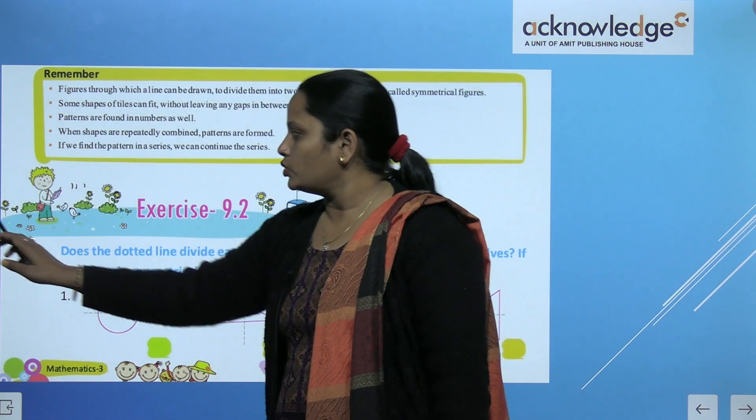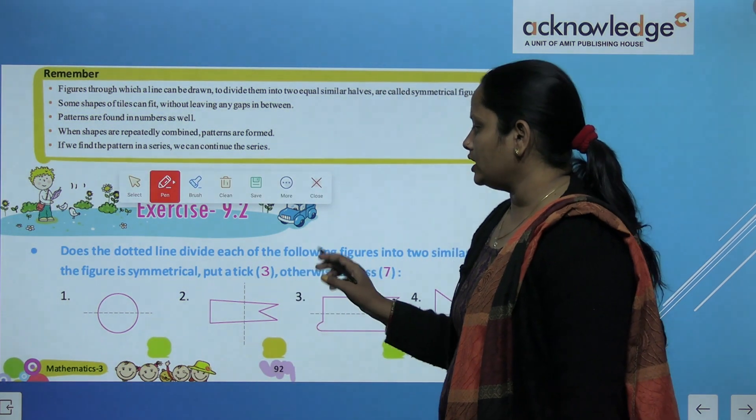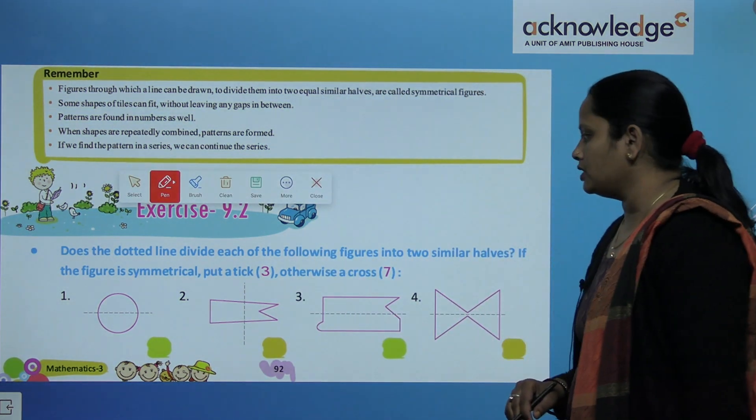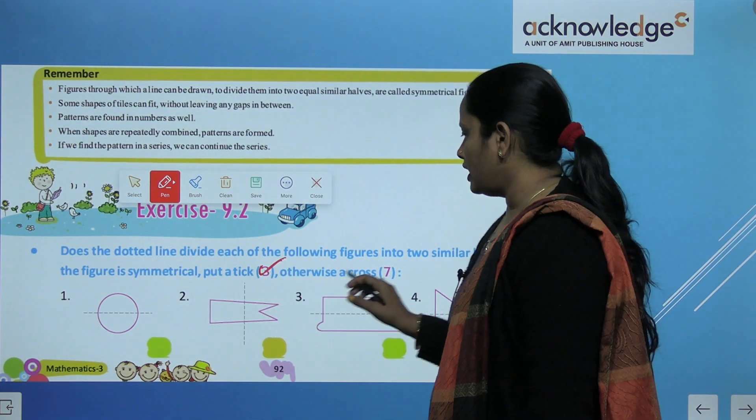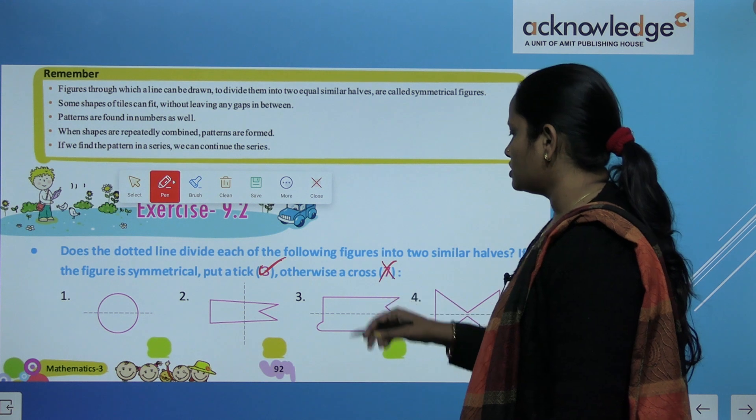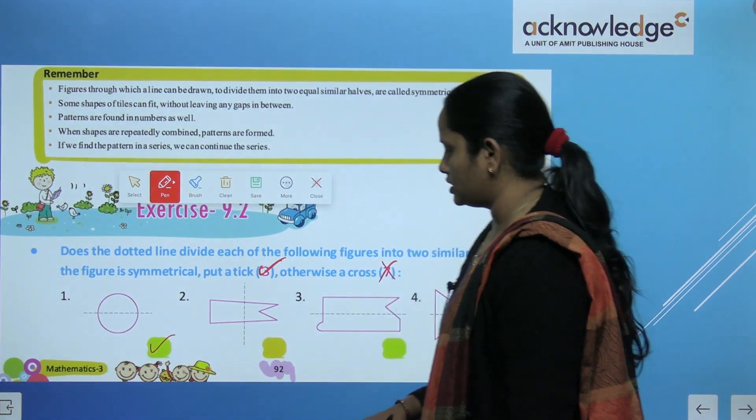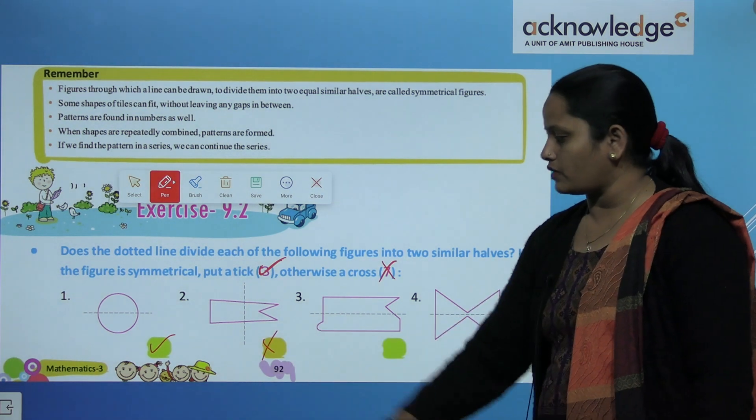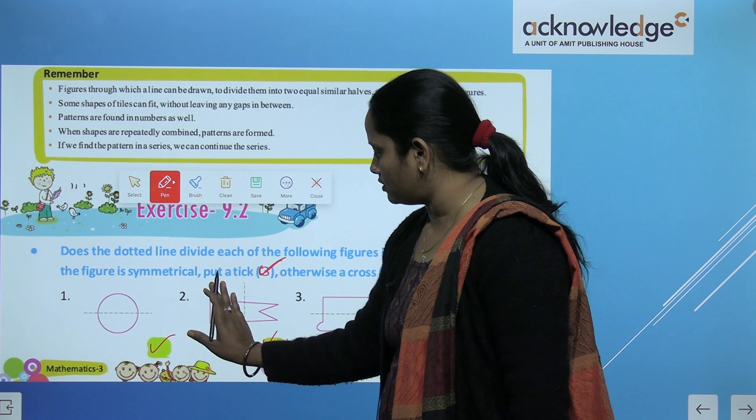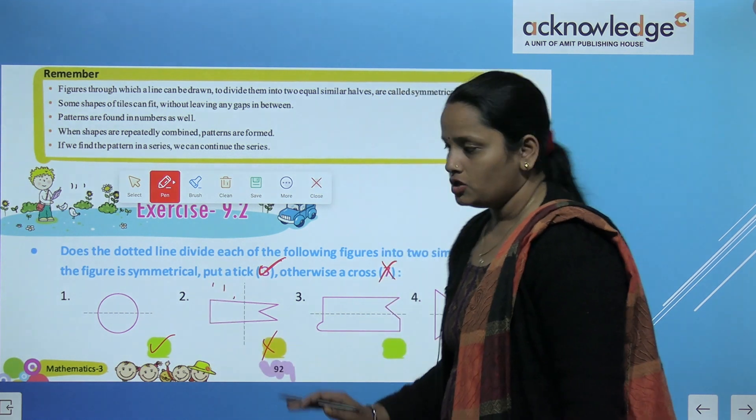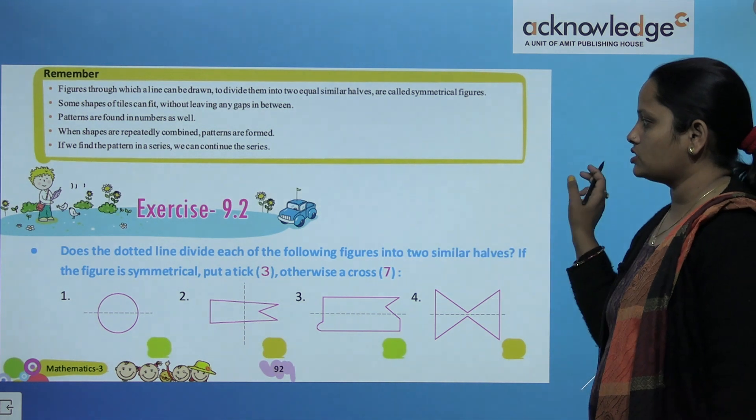So let's do this exercise children 9.2. Does the dotted line divide each of the following figure into similar halves? If yes put a tick mark and if no then cross. So aap dekho yaha pe ye figure hai. Yes it's dividing. Here this is not dividing. So here this is not symmetrical. So similarly do the rest questions children.